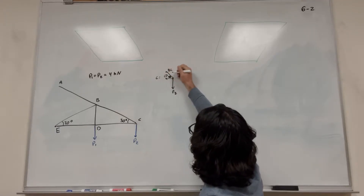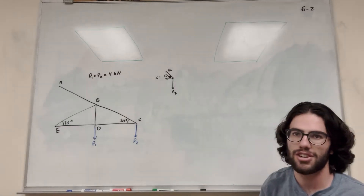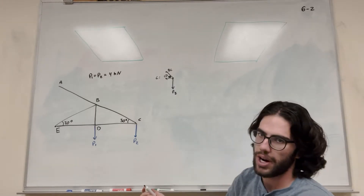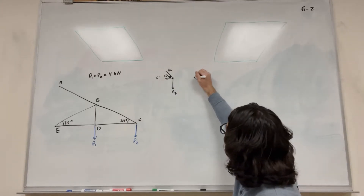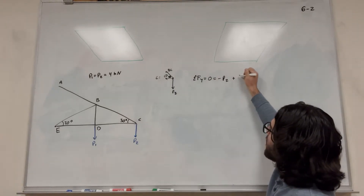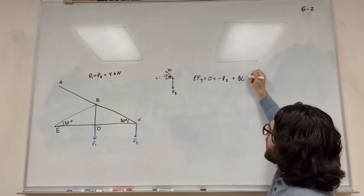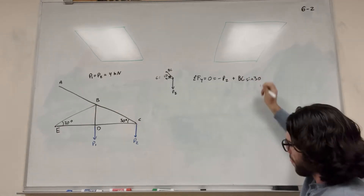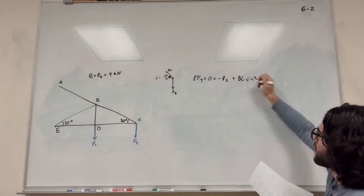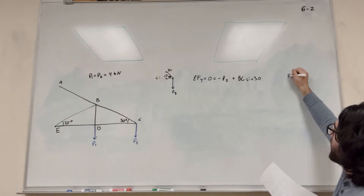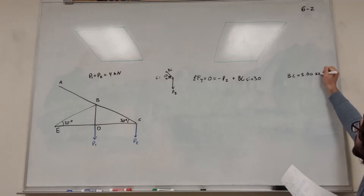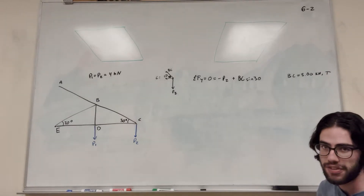We know that this is a 30-degree angle. Let's start with the sum of the forces in the Y direction, because we know P2, so we can find BC. Sum of forces in Y is equal to zero: negative P2 plus BC times sine of 30 equals zero. Moving one of these over and dividing by sine of 30, we find that BC is equal to 8 kilonewtons, and that's in tension.